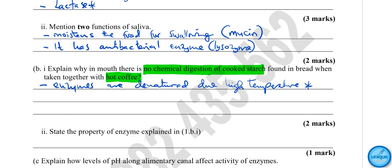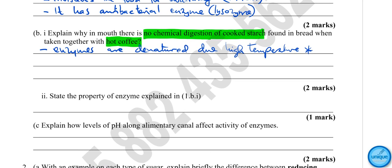State the property of enzymes explained above. Enzymes work best at optimum temperature. Temperature above this will denature enzymes. Temperature below optimum, enzymes will remain inactive. So that's the property: enzymes are temperature dependent.